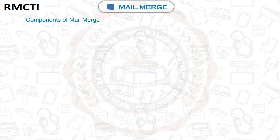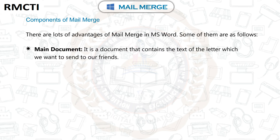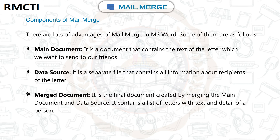Components of Mail Merge. There are three main components of Mail Merge in MS Word. Main Document: it is a document that contains the text of the letter which we want to send to our friends. Data Source: it is a separate file that contains all information about recipients of the letter. Merged Document: it is the final document created by merging the main document and data source, and it contains a list of letters with text and details of each person.